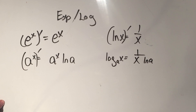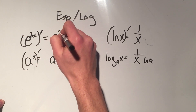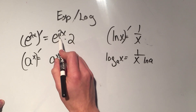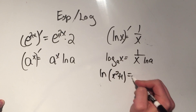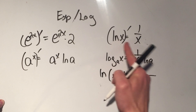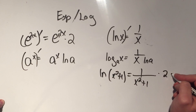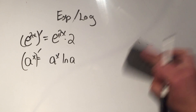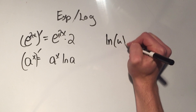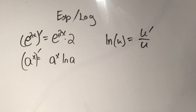Remember the chain rule always applies here. So if I had e to the 2x, the derivative would be e to the 2x times 2, because the derivative of 2x is 2. And if I had the derivative of ln of x squared plus 1, whatever's on the inside goes on the bottom, so x squared plus 1 goes on the bottom, times the derivative of that thing by the chain rule — times 2x. In general, the derivative of ln of u is u prime over u.